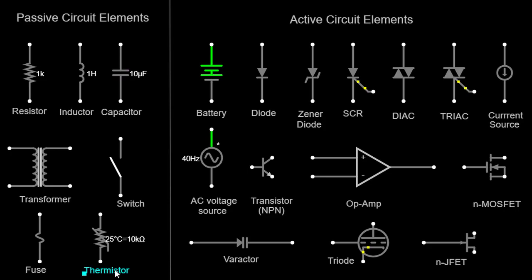Thermistor. A thermistor is a type of resistor whose resistance changes with temperature. It is used to measure and control temperature in electronic circuits. Thermistors can be either positive temperature coefficient (PTC) or negative temperature coefficient (NTC) devices.